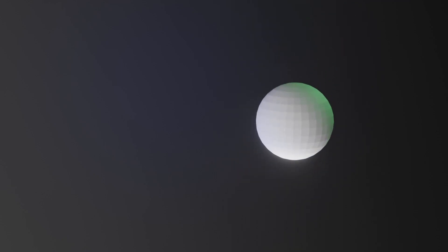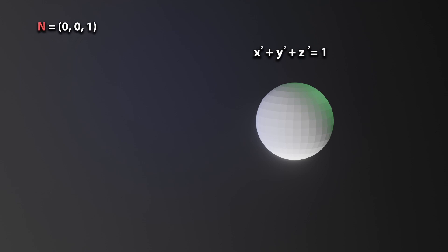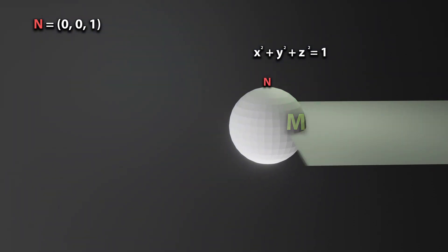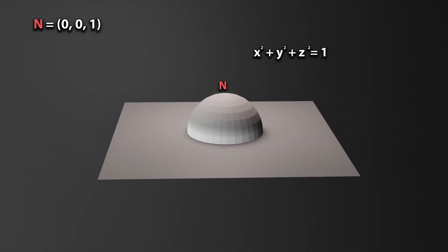Let's say we have a unit sphere, which is a set of points x, y, and z such that x squared plus y squared plus z squared is equal to 1. Let n be equal to (0, 0, 1), which is the north pole of our unit sphere. M can be considered as the rest of the sphere. Let's also add a complex plane with 0 as the z coordinate, which is our equatorial plane.